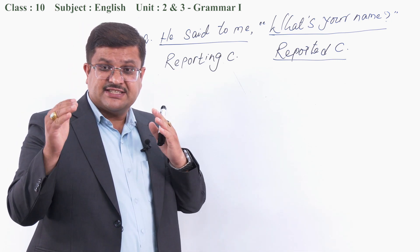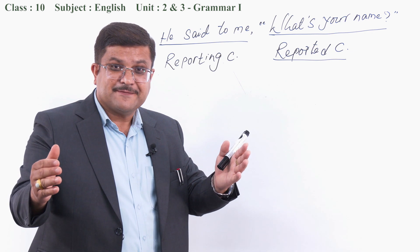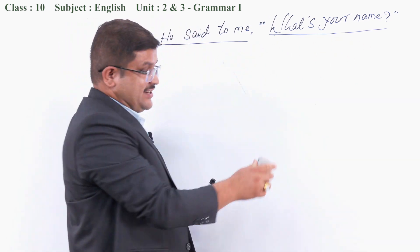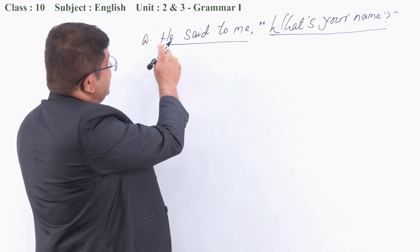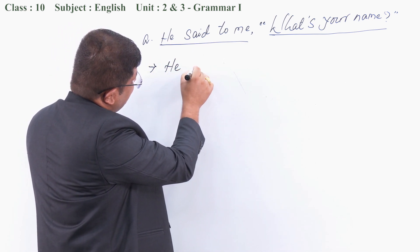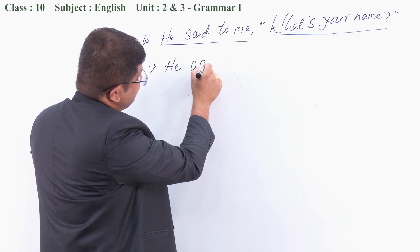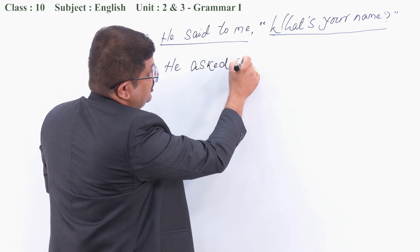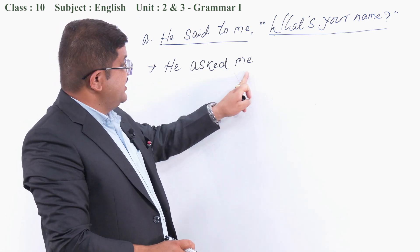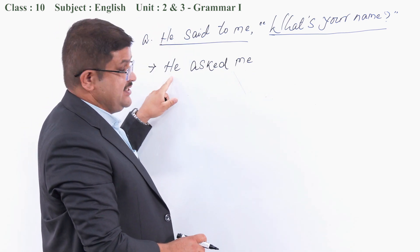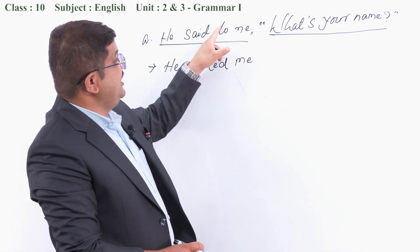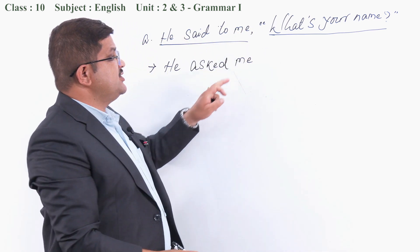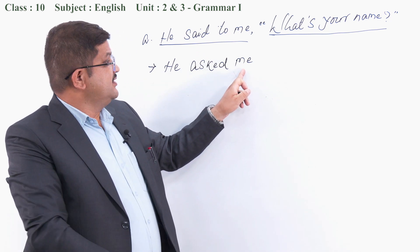Can you change this direct speech into indirect one? Now let us practice. He said changes into asked. We have to omit the connectives here while changing to indirect. We change 'he' as 'he', 'said' becomes 'asked', we delete 'to', and there is an object 'me', which we use as an object in indirect speech.